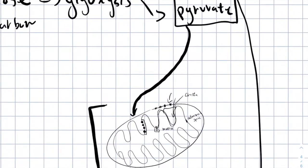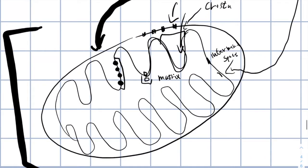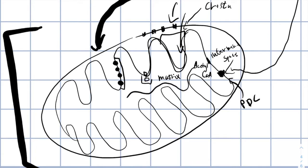So pyruvate enters the mitochondria and in a process involving a protein called the pyruvate dehydrogenase complex, which we will abbreviate as PDC, we create a two-carbon molecule called acetyl-CoA.